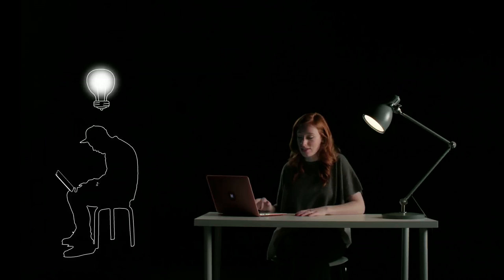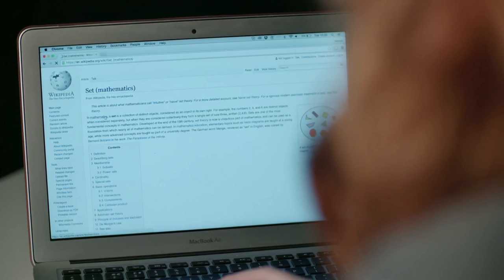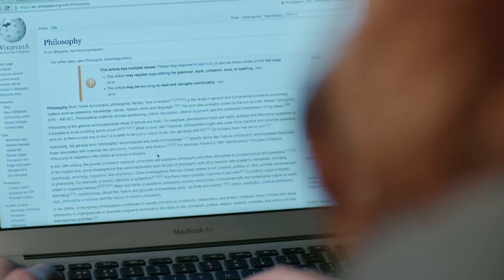So, the page for data, for example, links from set to maths to quantity to property and then philosophy, which, after a few more links, will loop back onto itself.